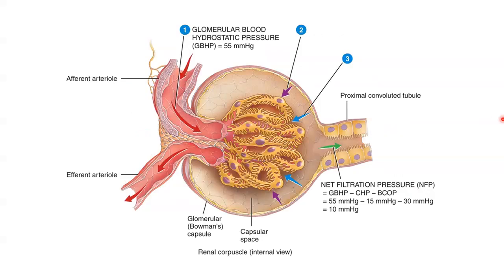Glomerular filtration depends on three main pressures: one promotes filtration and two oppose it. The first is glomerular blood hydrostatic pressure — the pressure of blood in the glomerular capillaries, generally about 55 mmHg — which promotes filtration by forcing water and solutes in blood plasma through the filtration membrane into the Bowman's capsule.